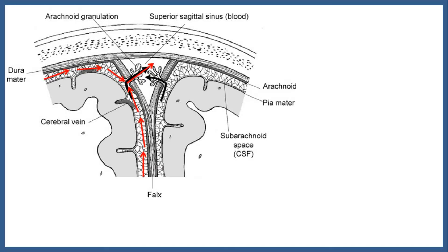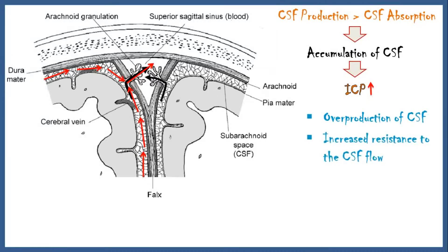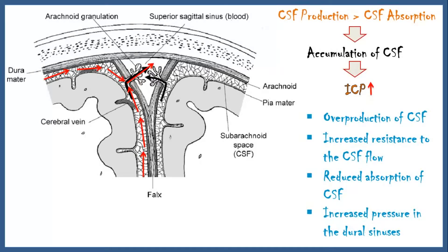When CSF production is greater than its absorption, it causes accumulation of CSF inside the ventricles and the subarachnoid space, which ultimately increases intracranial pressure. This imbalance between production and absorption can occur due to overproduction of CSF, increased resistance to CSF flow, reduced CSF absorption, and increased pressure in the dural sinuses, which indirectly reduces CSF absorption.